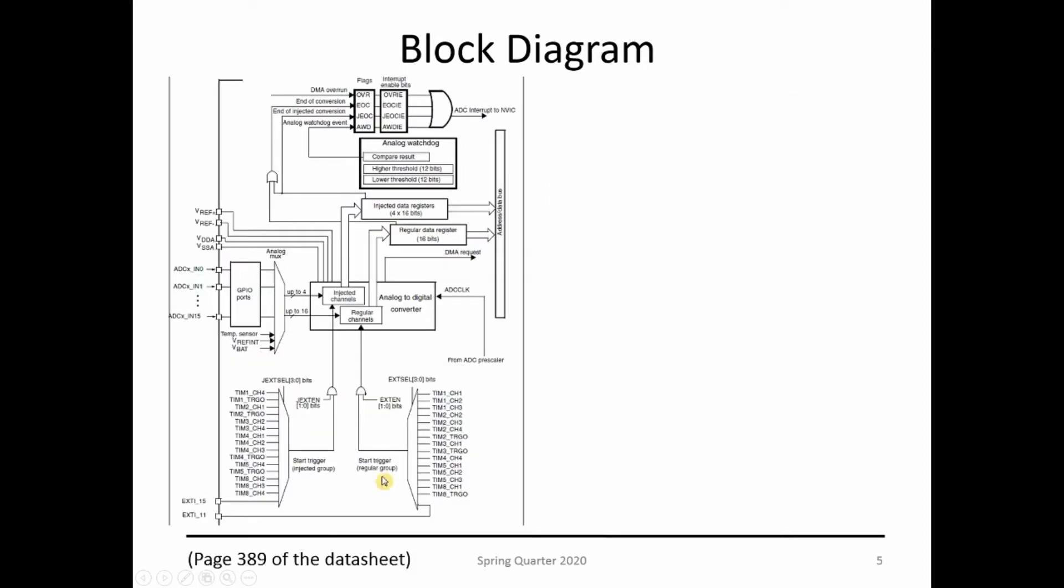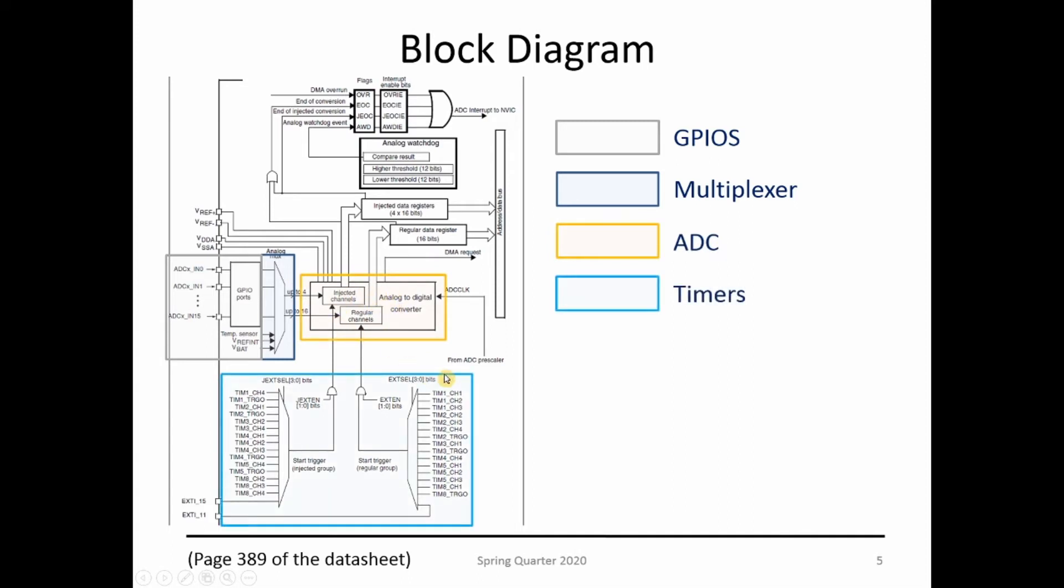If you go to page 389 of your datasheet, this is how the block diagram looks. You have the GPIOs over here, the temperature sensor and battery, then the multiplexer that feeds the ADC. You have the timers here to parameterize the ADC to go autonomous, along with registers, the NVIC, and the data bus. Go to page 389 and you can see this picture with more detail—all this is represented inside the block diagram.